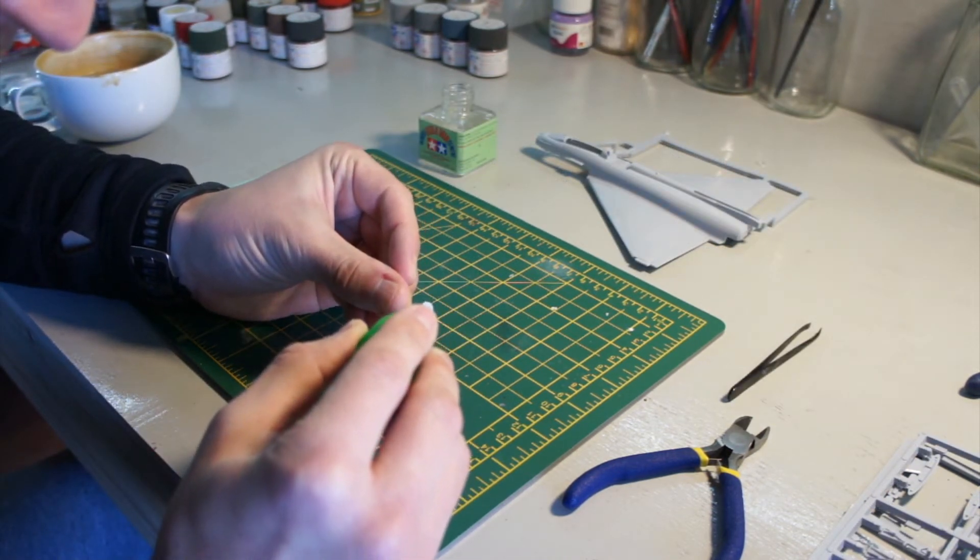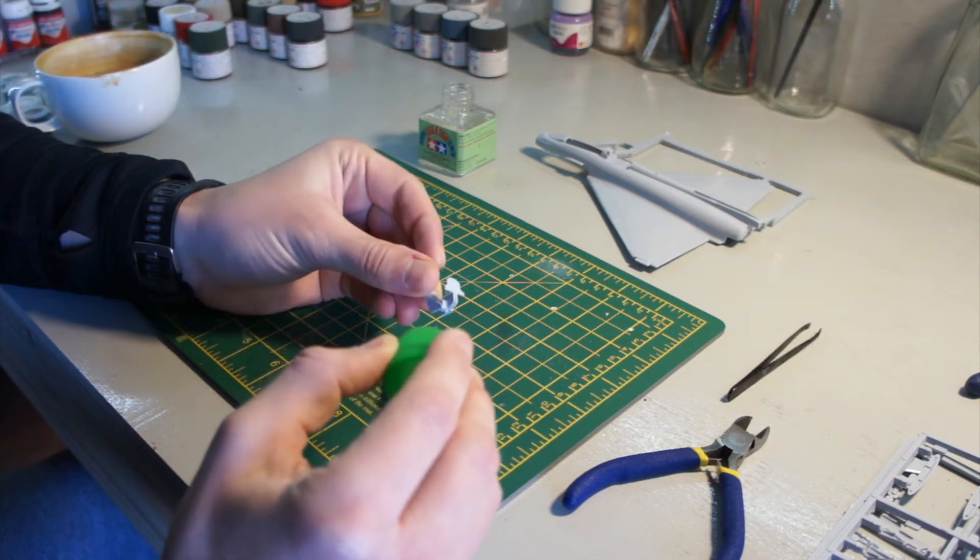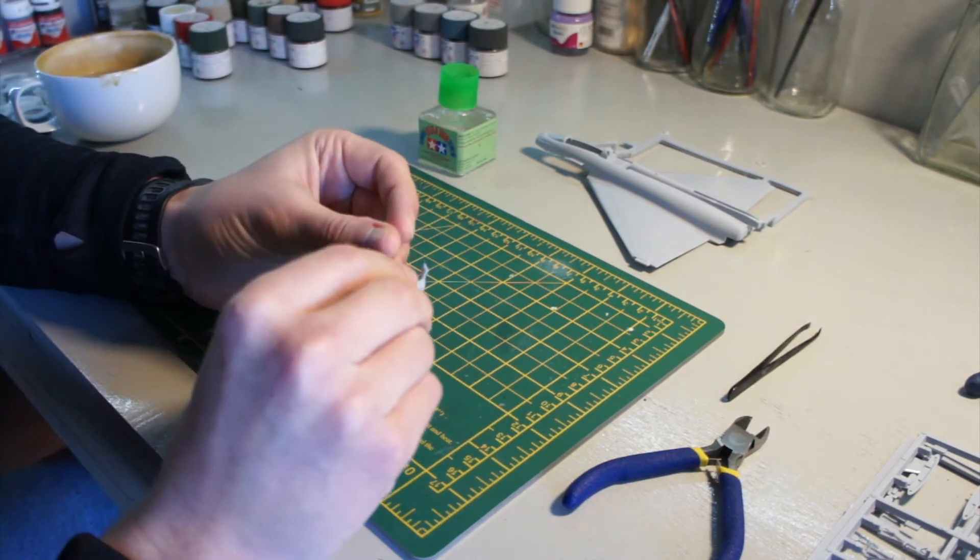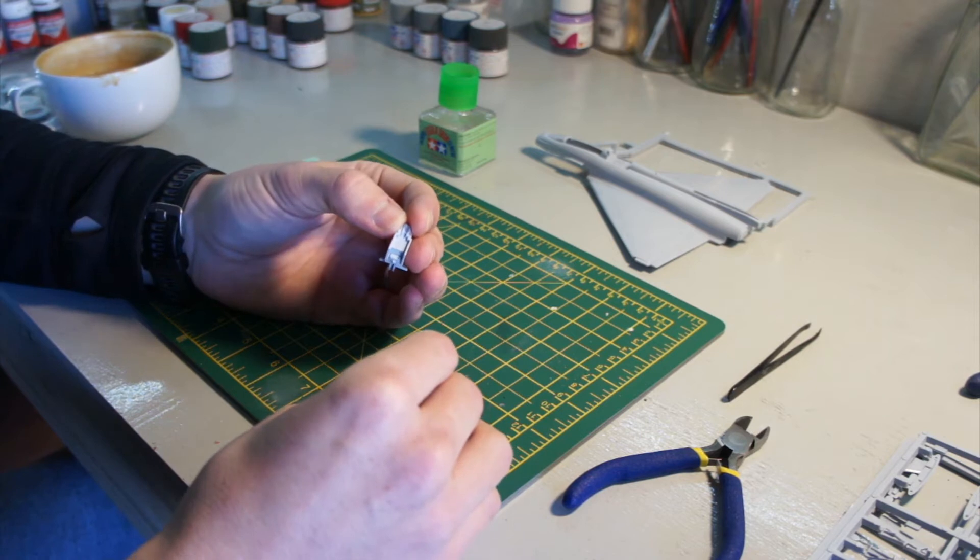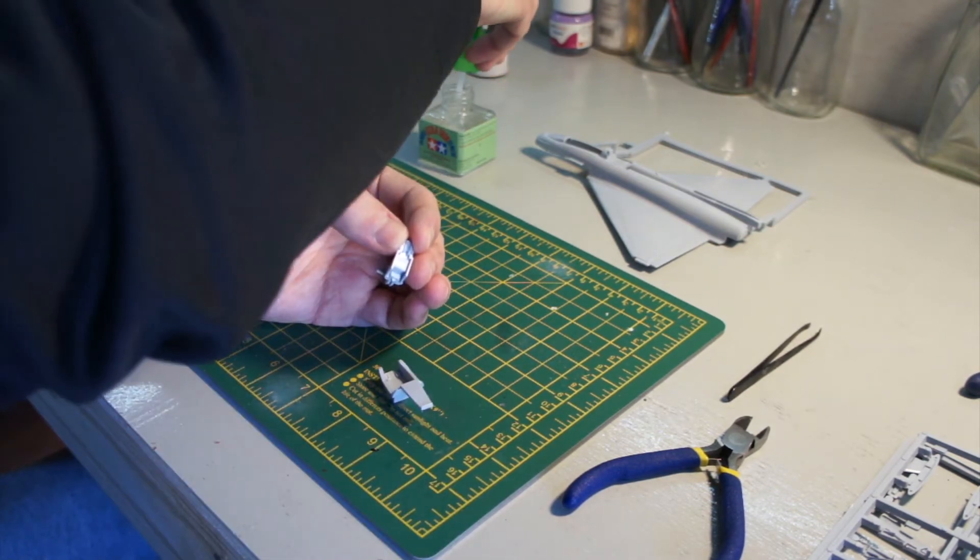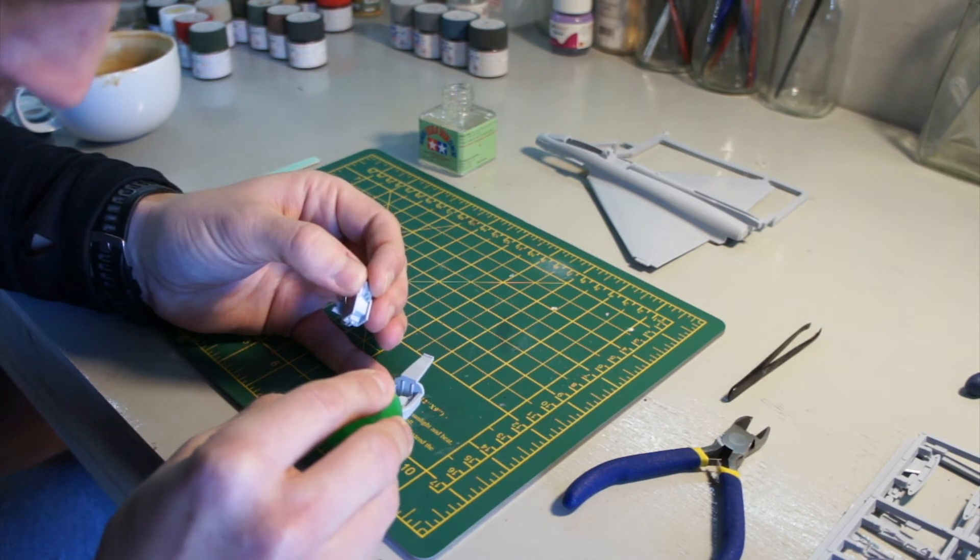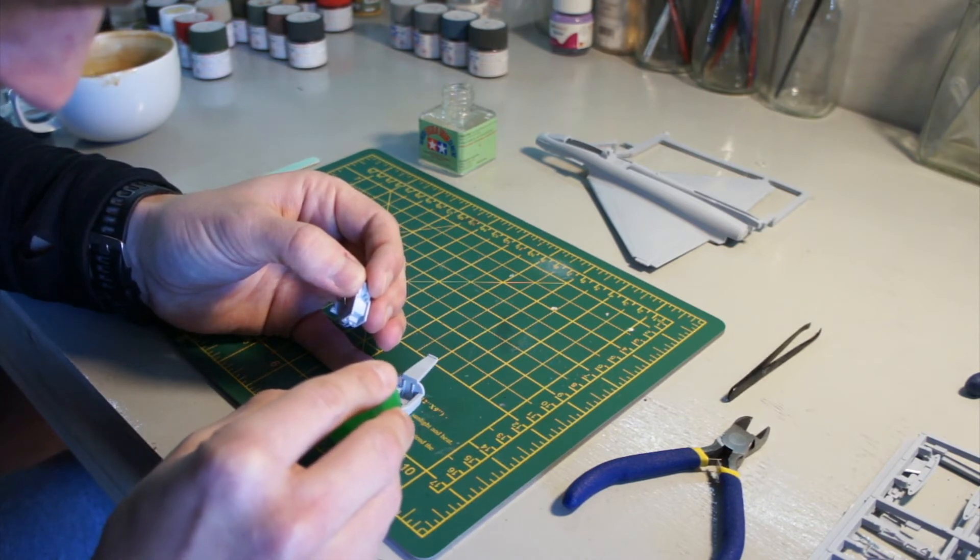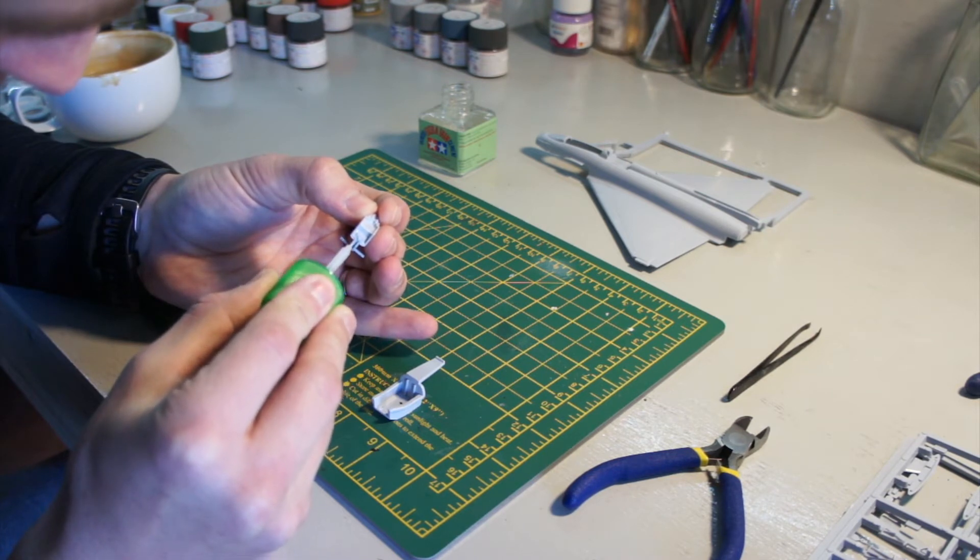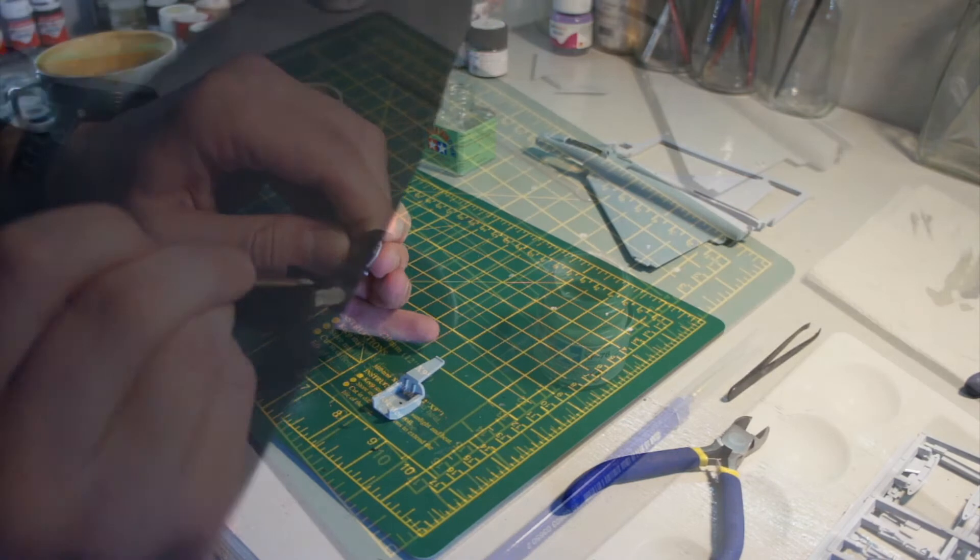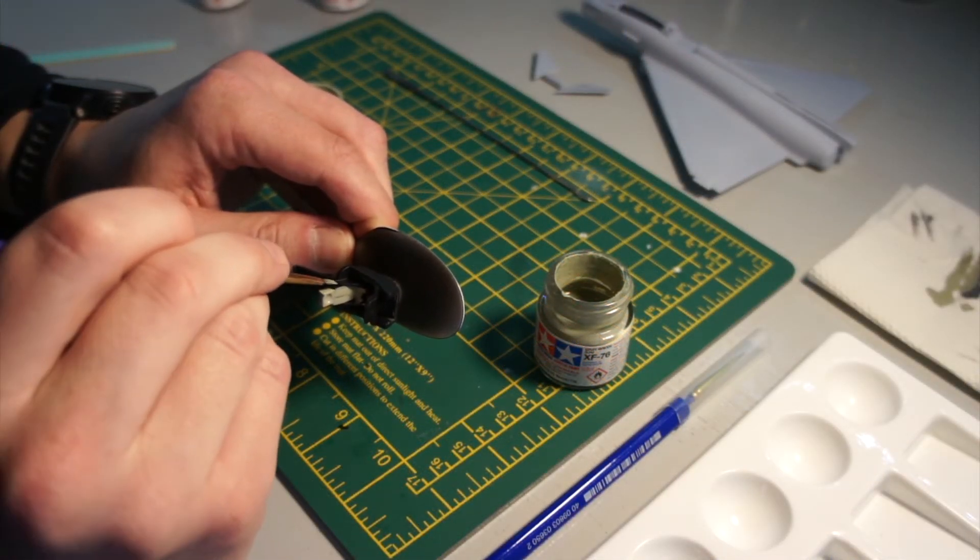I did a lot of dry fitting, and then when I was happy I got the Tamiya extra thin cement and used that to secure it all together. I've been fortunate enough to sit in the seat of one of these Eurofighter Typhoons, 6 Squadron up at Leuchars up near Dundee. The cockpit is incredible. If you see some images, there's so many buttons and dials, it's quite phenomenal.